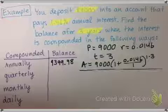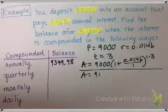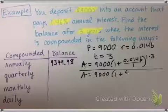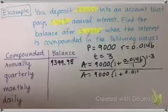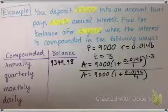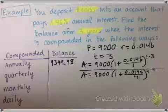Okay, let's try compounded quarterly. So my principal is the same. So 1 plus 0.0146 divided by 4, because it's compounded four times a year, to the power of 4 times 3, n times t.